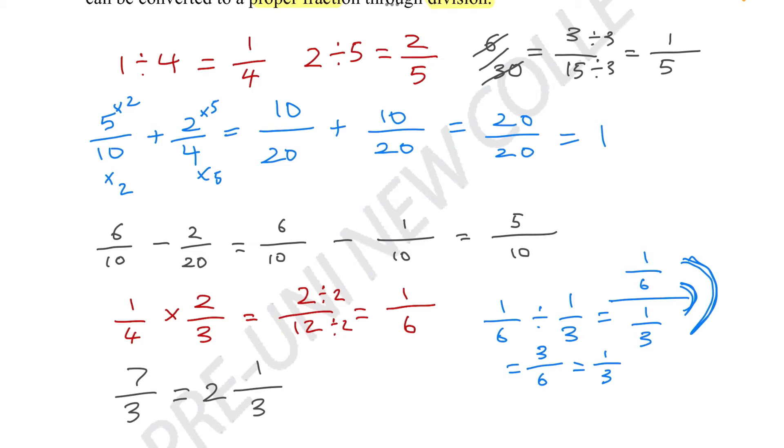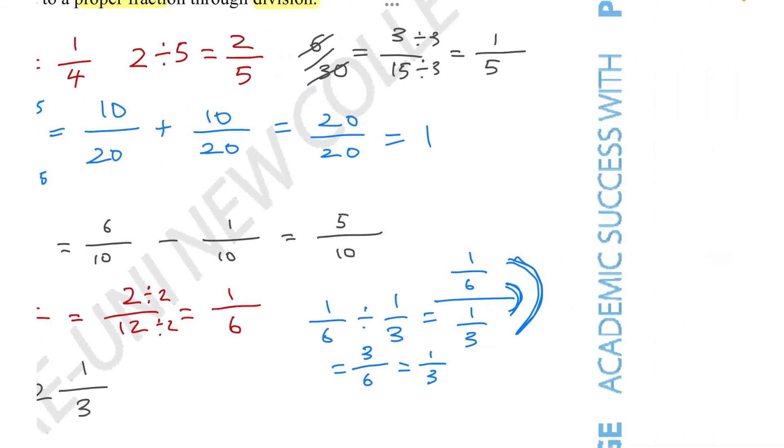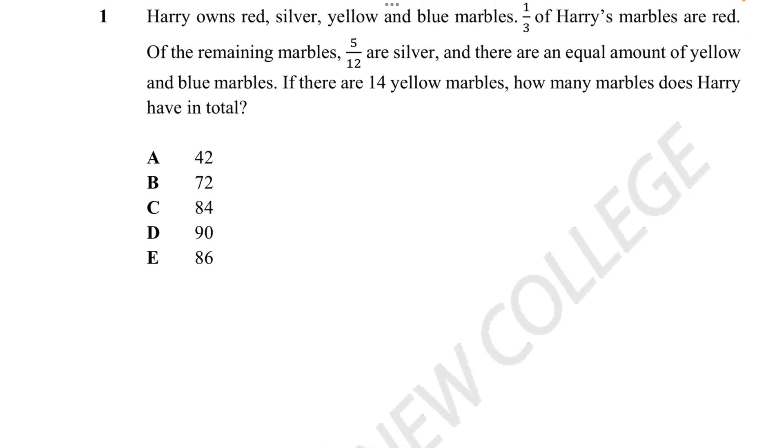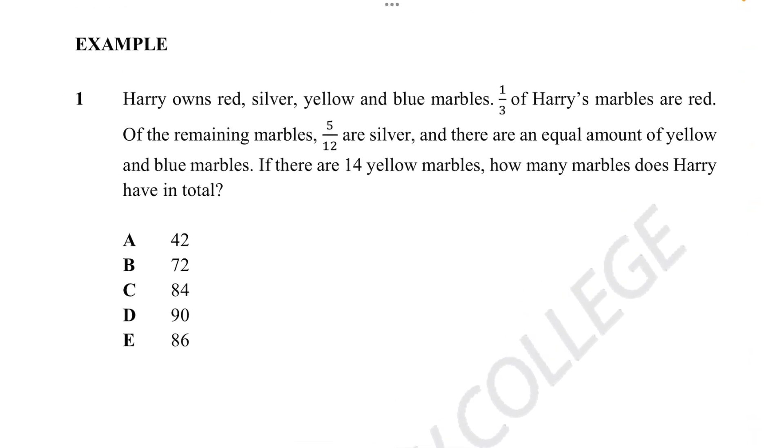Okay, I think we're ready to do some examples. Example 1: Harry owns red, silver, yellow, and blue marbles. One third of Harry's marbles are red. Of the remaining marbles, 5 out of 12 are silver, and there are an equal amount of yellow and blue marbles. If there are 14 yellow marbles, how many marbles does Harry have in total?